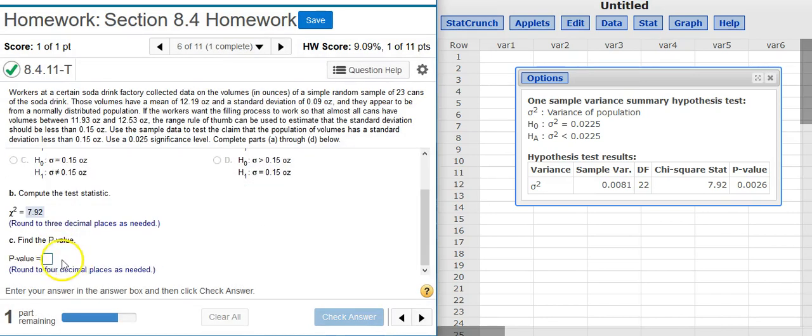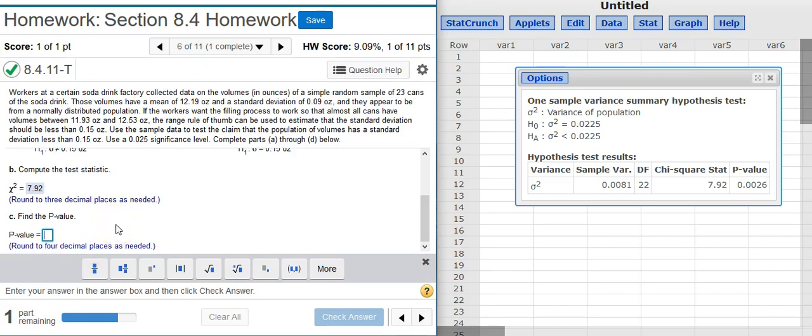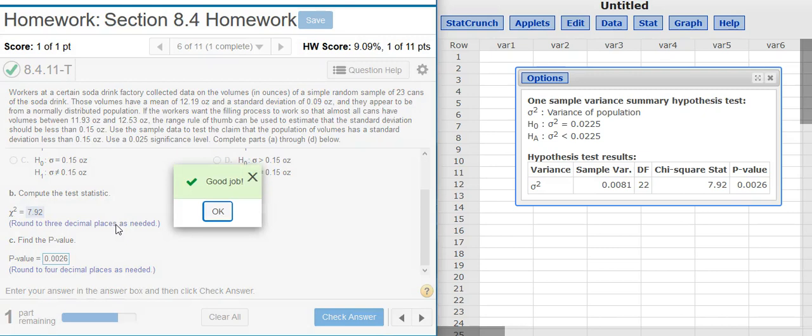Part C asks for the p-value, which, of course, is the last value in that results window table right next door to the test statistic. Good job!